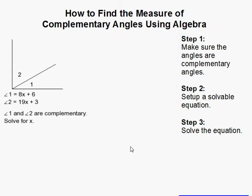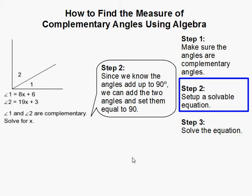Now that we know they're complementary, we have to set up an equation so we can solve. Recall that if angles are complementary, they add up to 90 degrees. So I simply add the two angles up. I have 19x plus 3 here, plus 8x plus 6, so angle 1 plus angle 2 should equal 90 degrees.